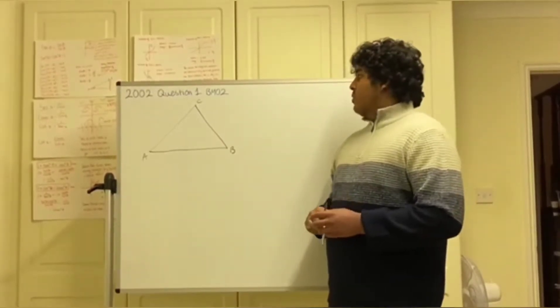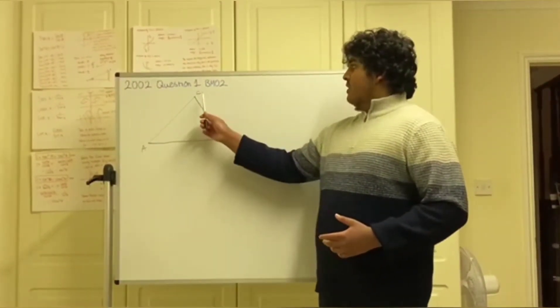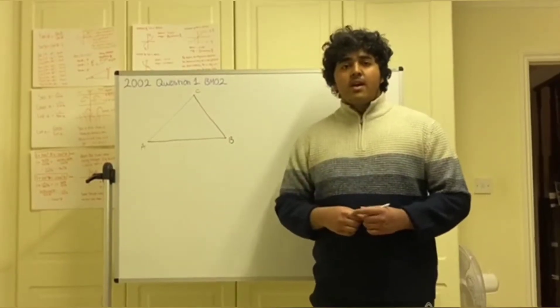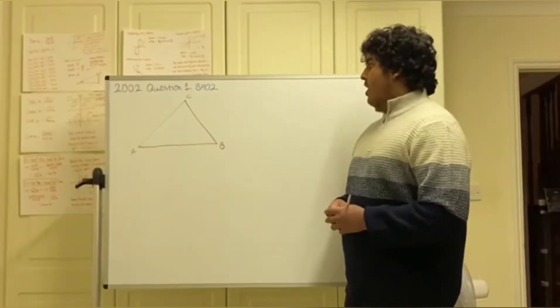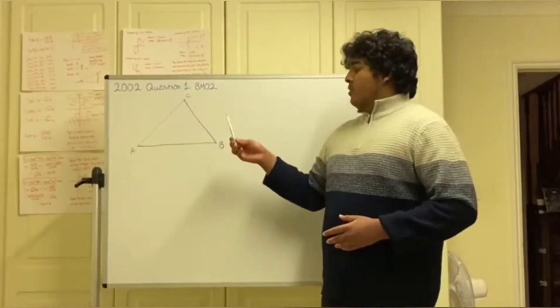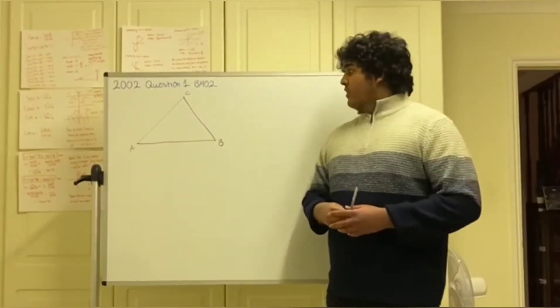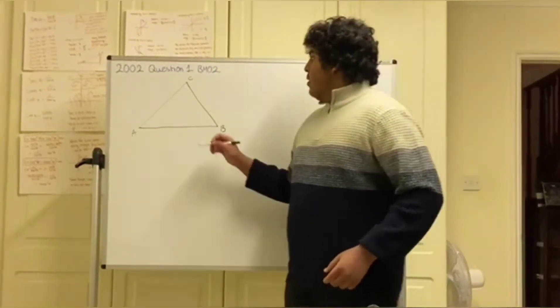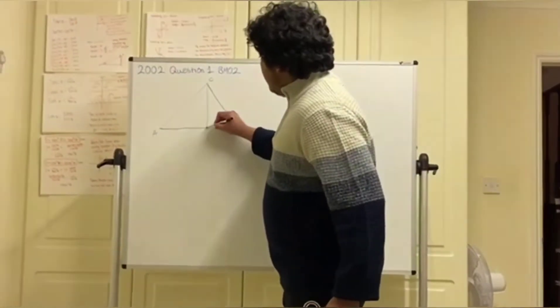Next, as the question asks, the perpendicular from C is brought down to side AB, which essentially is asking for the line where you would find the orthocenter of the triangle ACB. So we'll draw a perpendicular line down to AB.